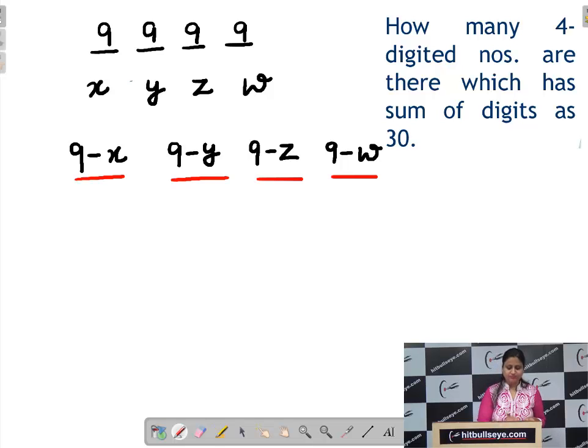the third to be 9 minus z and the fourth to be 9 minus w. Now, since the dropped number should be 6 and x, y, z, w, they can be 0 as well. So, we can say that x plus y plus z plus w, that should be 6 always.